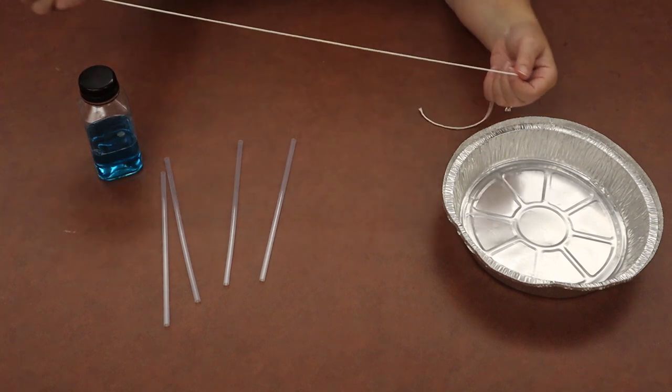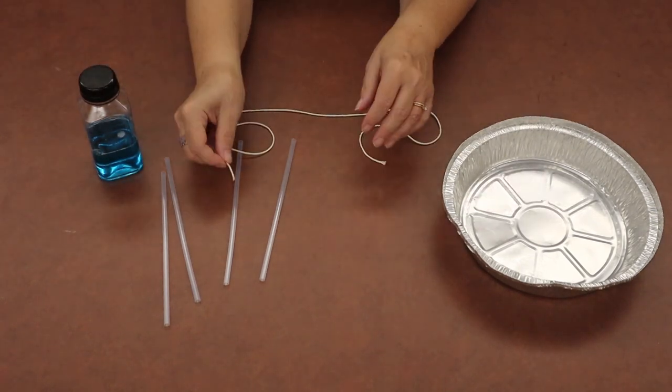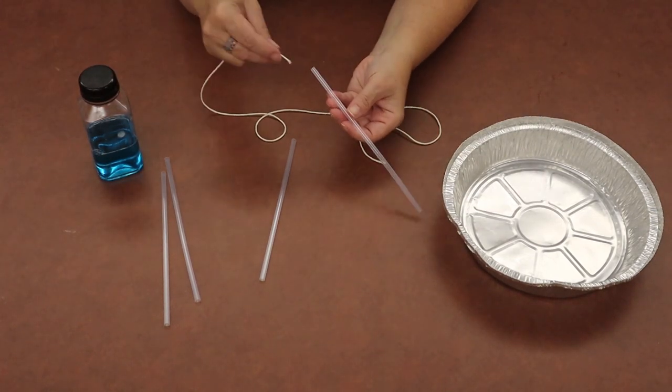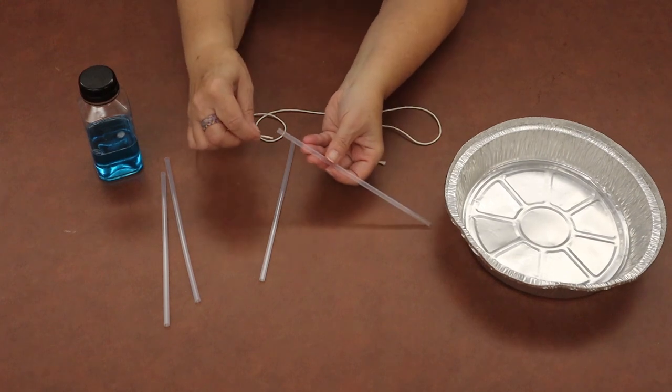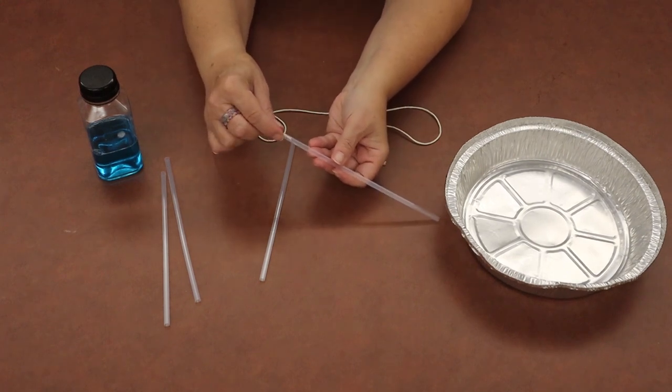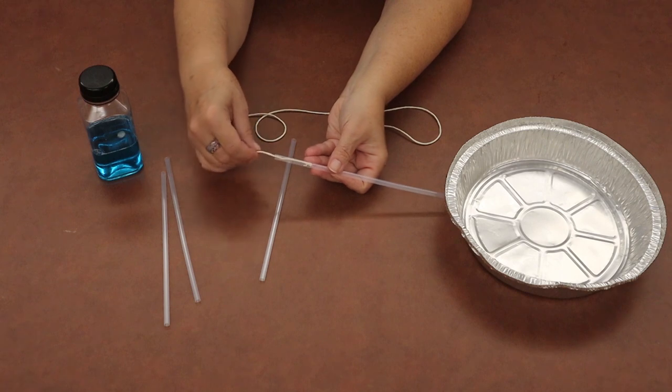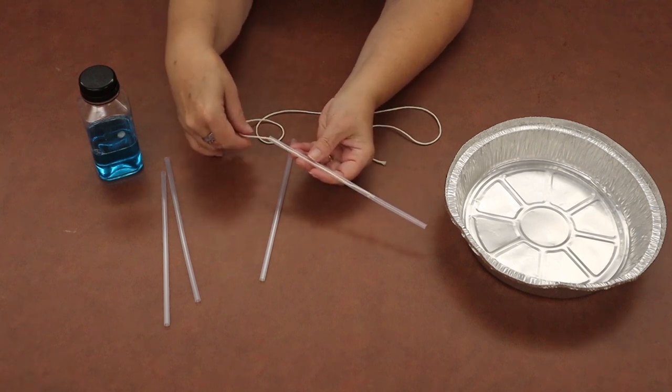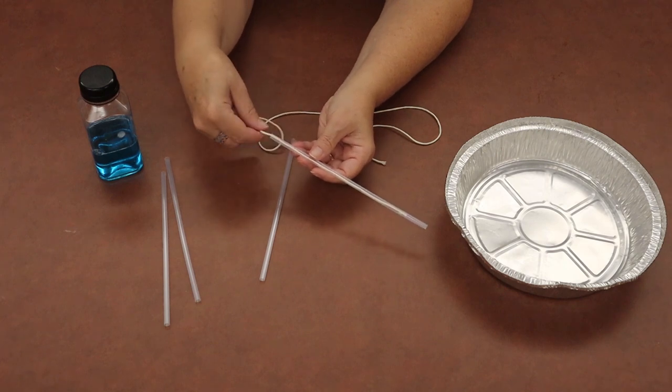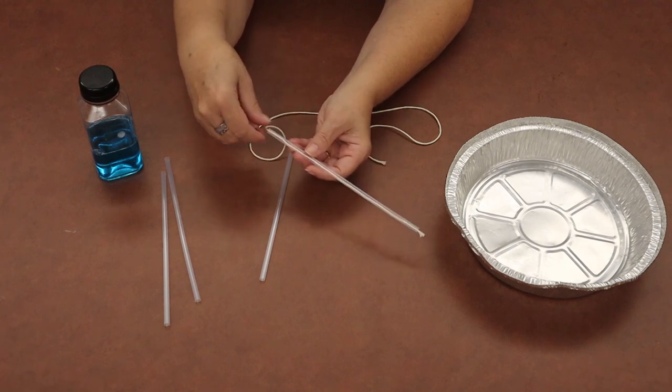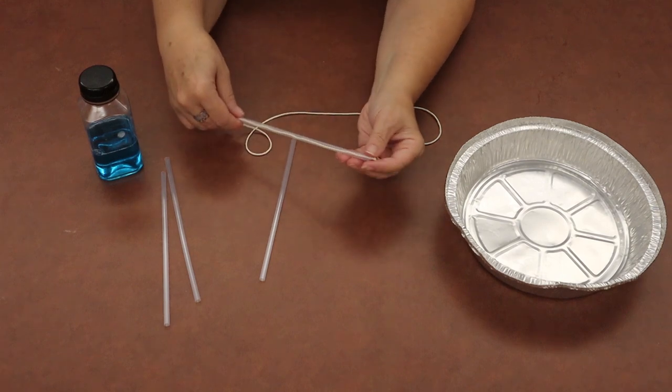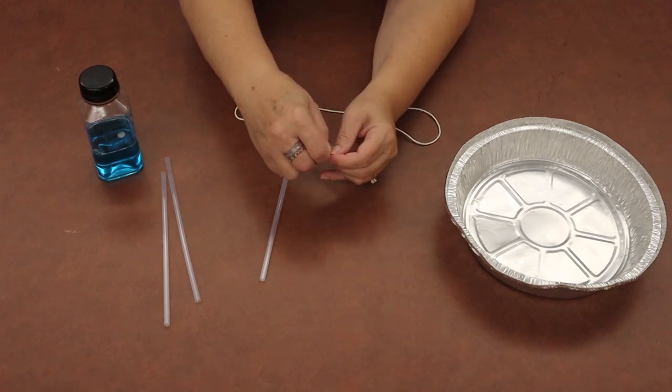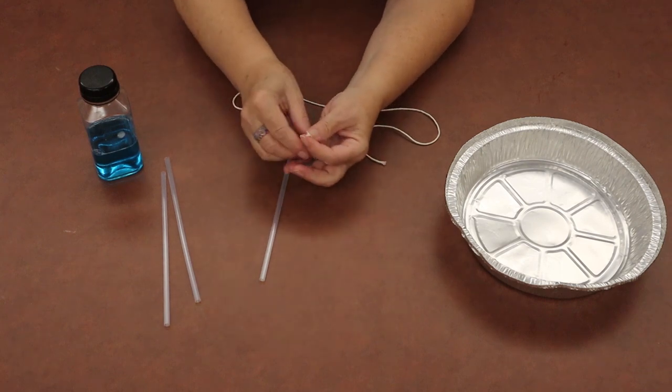To get started, we're going to take our length of string and one of the straws, and we will put the string through the end of the straw and just push it through. The string is pretty cooperative and it's going to go through there pretty easily. If it's giving you a hard time, maybe twist the end so all the threads are together to keep it from spreading out.